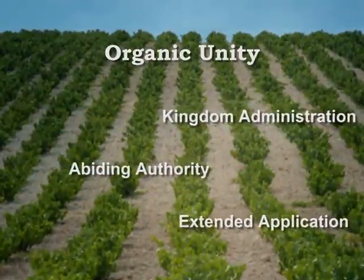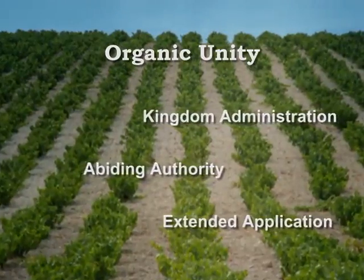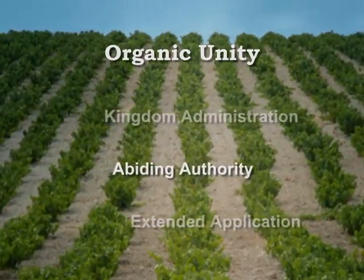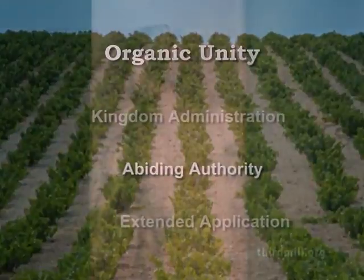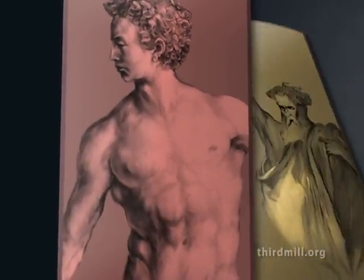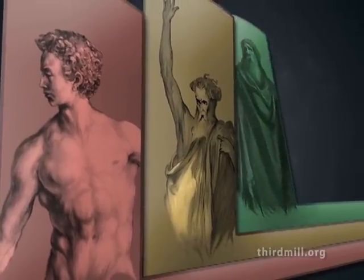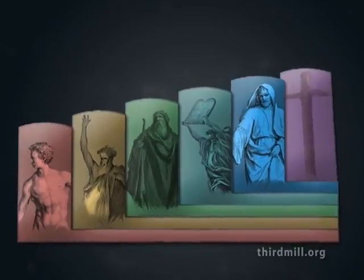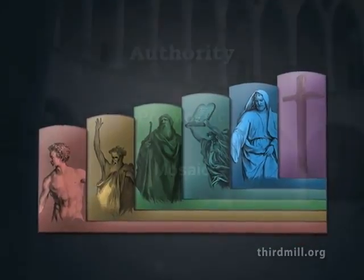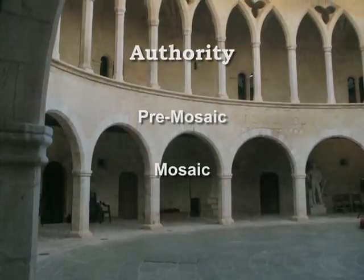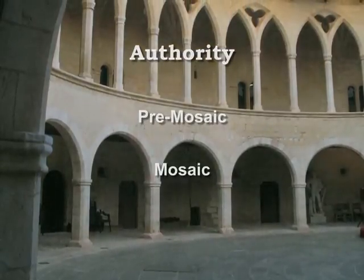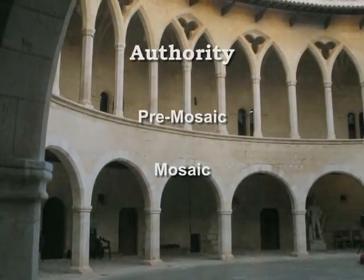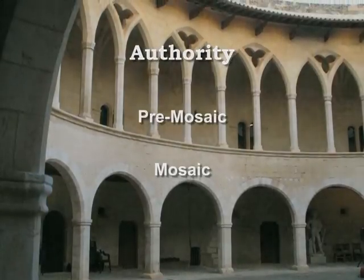Now that we see how Old Testament covenants administered the one goal of God's kingdom, we should also look at their organic unity in terms of their authority. When we look at how earlier covenant ages were acknowledged in the structures of later periods, it quickly becomes evident that the authority of earlier covenants always extended to later covenants. There are countless ways to show that this is true, but for simplicity's sake, we will look in just two directions. First, the continuing authority of covenants before Moses, and second, the continuing authority of the covenant with Moses.